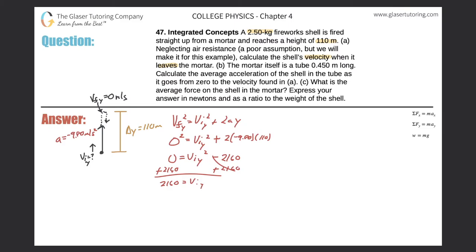Adding 2160 to both sides: 2160 equals the initial velocity in the y-direction squared. To solve, take the square root — remembering that gives a plus and a minus. Taking the square root of 2160 gives 46.5 meters per second. Since the motion is pointing upward, the answer is positive: the initial velocity in the y-direction is positive 46.5 meters per second. That's the velocity the firework leaves the mortar with.